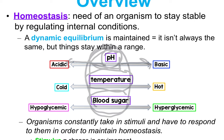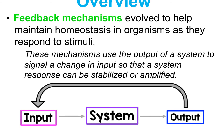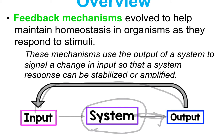Organisms are constantly taking in stimuli and have to respond to it in order to maintain homeostasis. A stimulus is a change in the environment, and a response is the change that happens in the organism as a result of that stimulus. Feedback mechanisms evolved to help maintain homeostasis, using an output of a system to signal a change and an input so that the system can respond — either stabilizing or amplifying.